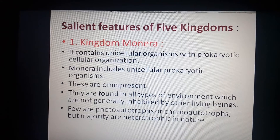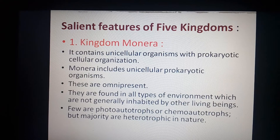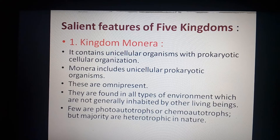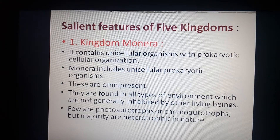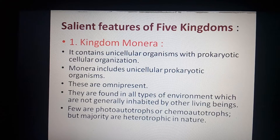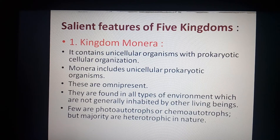Some are photo-autotrophs — organisms that prepare their food using sunlight. Some are chemo-autotrophs — organisms that prepare their food using chemical energy, like Nitrosomonas (nitrifying bacteria), Thiobacillus, and Ferrobacillus, which are all examples of chemo-autotrophs.